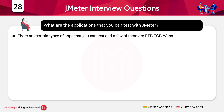The next question is: what are the applications that you can test with JMeter? There are certain types of applications you can test, and a few of them are: FTP, TCP, websites, shell scripts, SMTP, JDBC, and LDAP.